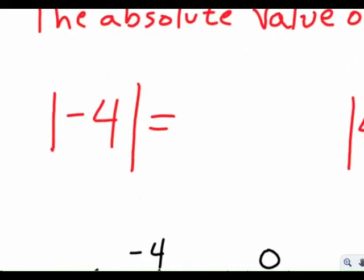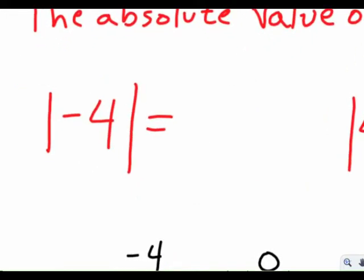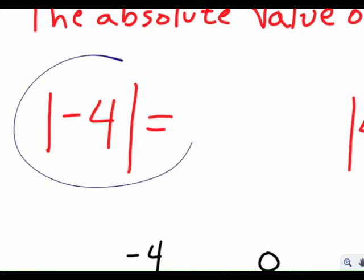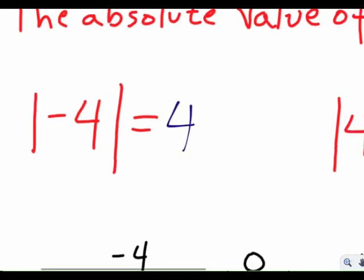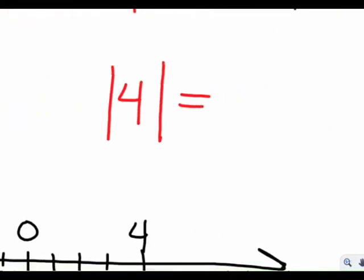The way that we write absolute value is like this — we have two bars around the number. So this statement says the absolute value of negative 4 equals what? And of course now we know how to finish this equation: simply positive 4. Same thing over here — the absolute value of positive 4 is equal to positive 4.